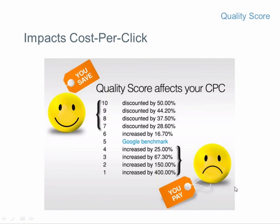Quality Score also impacts cost per click. The average quality score on Google is 5 out of 10. A 10 out of 10 quality score results in a 50% discount on cost per click, whereas a 1 out of 10 quality score results in a 400% increase in cost per click. Google wants to incentivize advertisers to create compelling ads, since they only get paid when people click. Conversely, they penalize advertisers who create poor, irrelevant ads.